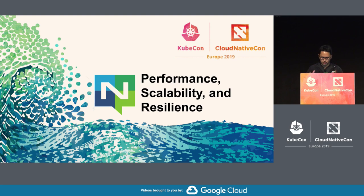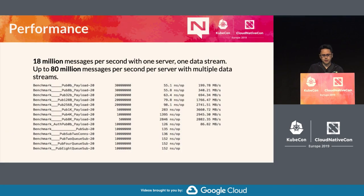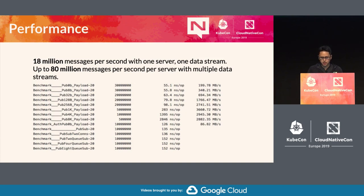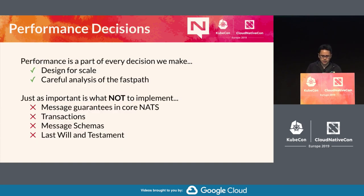Some of the main traits of NATS are its performance, scalability, and resilience. The single NATS server binary, written in Go, can push around 18 million messages per second. If you create multiple connections on a very beefy machine, you can get up to 80 million messages per second. The team is very careful with performance, giving very careful analysis to anything that goes through the fast path.